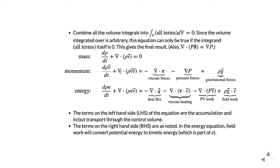We're going to use the integral form because it's convenient for application to finite volume approaches. If we started with the differential form, we'd simply integrate over a volume and then convert volume integrals — like the integral of del dot tau — back to surface integrals using the Gauss divergence theorem. So starting with the integral form avoids an extra step, but they're effectively equivalent. The terms on the left-hand side represent accumulation in the control volume and transport in and out; the right-hand side terms correspond to the conservation laws. And that's it for the governing equations.